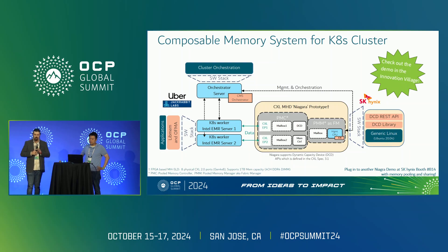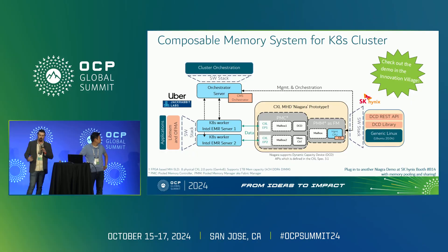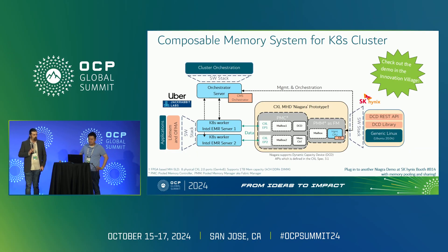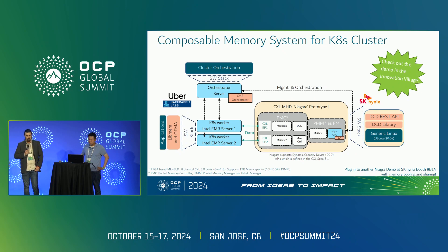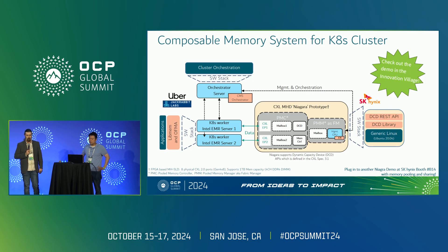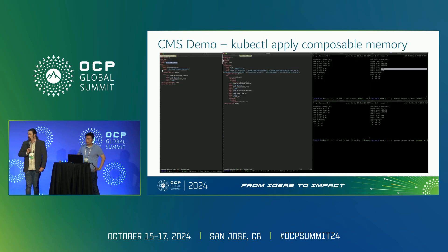Here is the larger overview of the setup we're running right now. We've got two Emerald Rapids platforms and the Niagara system connected through a Gen 4 by 8 link. The cluster orchestration mechanism is Kubernetes, with our bits running in between the application and the memory resource.